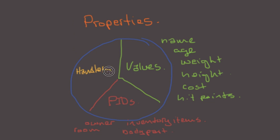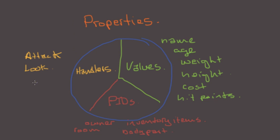The final thing we have is handlers — this is where the logic lives. You might have an attack handler for how to handle attacks, a look handler for how things look at you, a move handler for how to move between rooms, and an inventory handler for moving items between a character and a room. EarlMudd is made up of these processes that have logic handlers, values, and PIDs pointing to other processes.